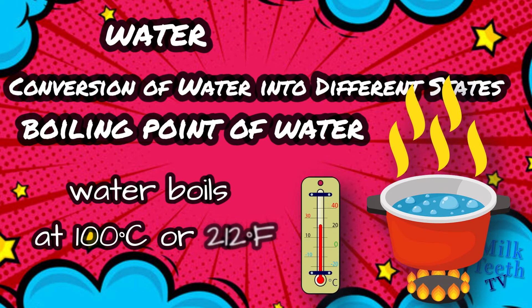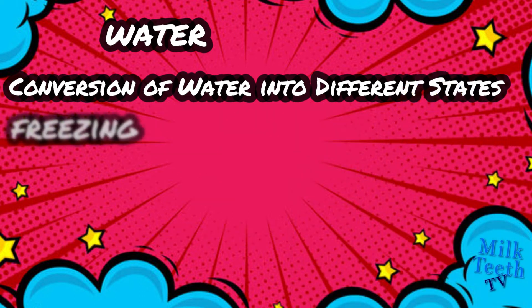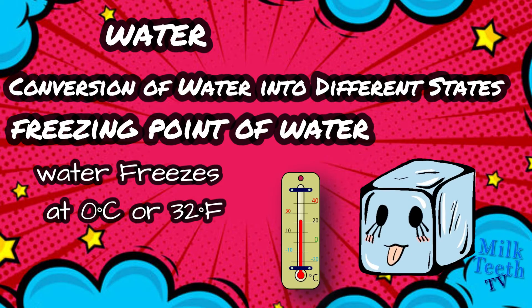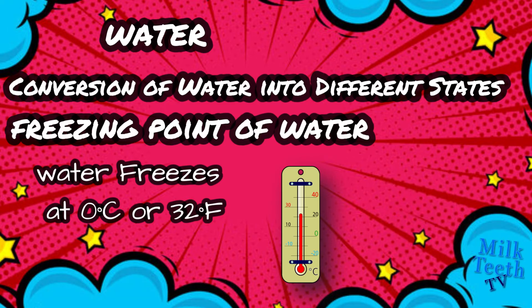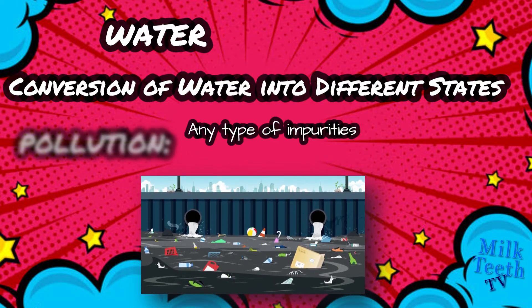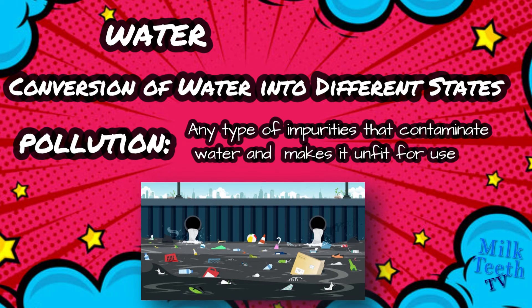Boiling point of water: water boils at 100°C or 212°F. Freezing point of water: water freezes at 0°C or 32°F. Pollution: any type of impurity that contaminates water and makes it unfit for use is called water pollution.